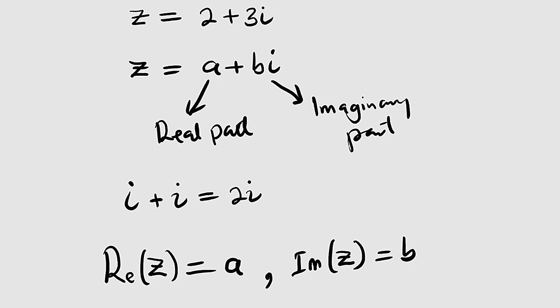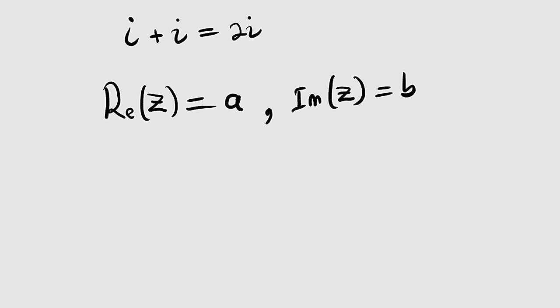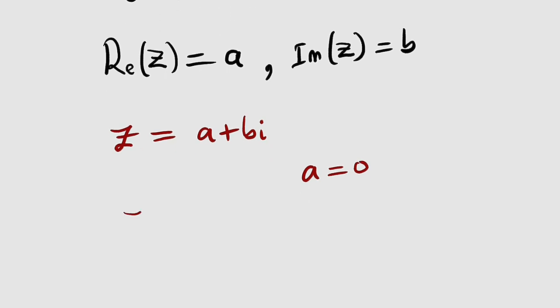Yes, because if z is equal to a + bi, what if a is equal to zero? We know that zero is a real number, therefore we have z equal to 0 + bi. So you can see this is just an imaginary number bi, which is also considered as a complex number because the real part is equal to zero. So what if b is equal to zero?